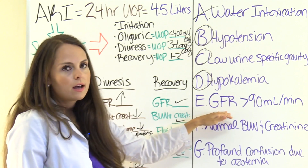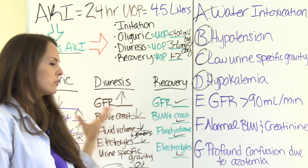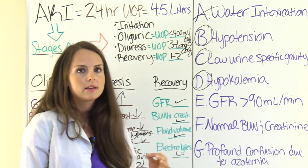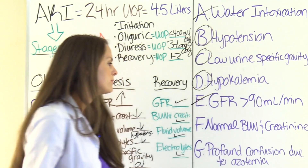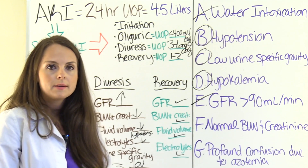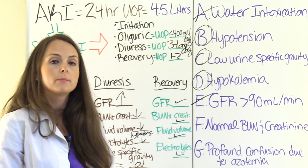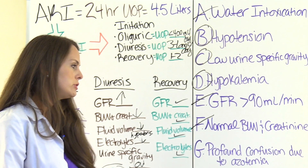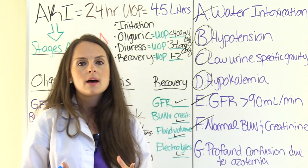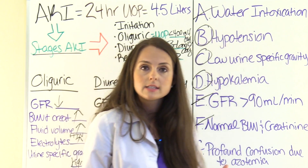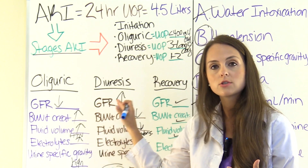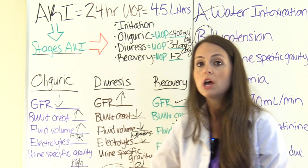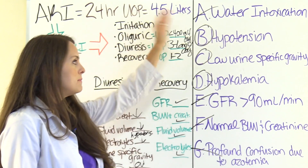E: GFR greater than 90 milliliters per minute — No. Their GFR is increasing but still abnormal; it would only be normal in the recovery stage. F: normal BUN and creatinine — No, that's in the recovery stage. BUN and creatinine are starting to decrease but are not normal yet. G: profound confusion due to azotemia — No. In the diuresis stage, because the BUN is starting to come down, the patient actually becomes more alert and oriented compared to the oliguric stage. So our answers are B, C, and D.